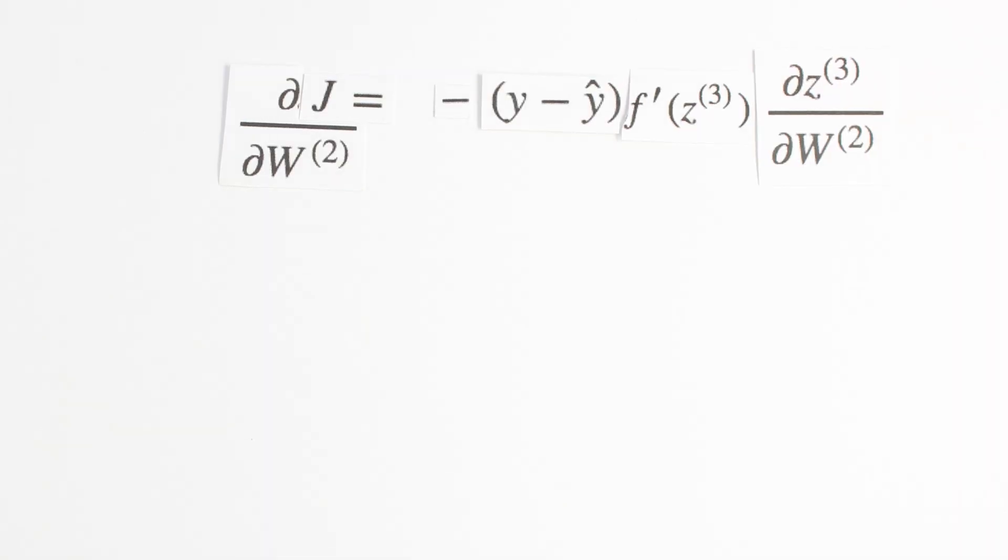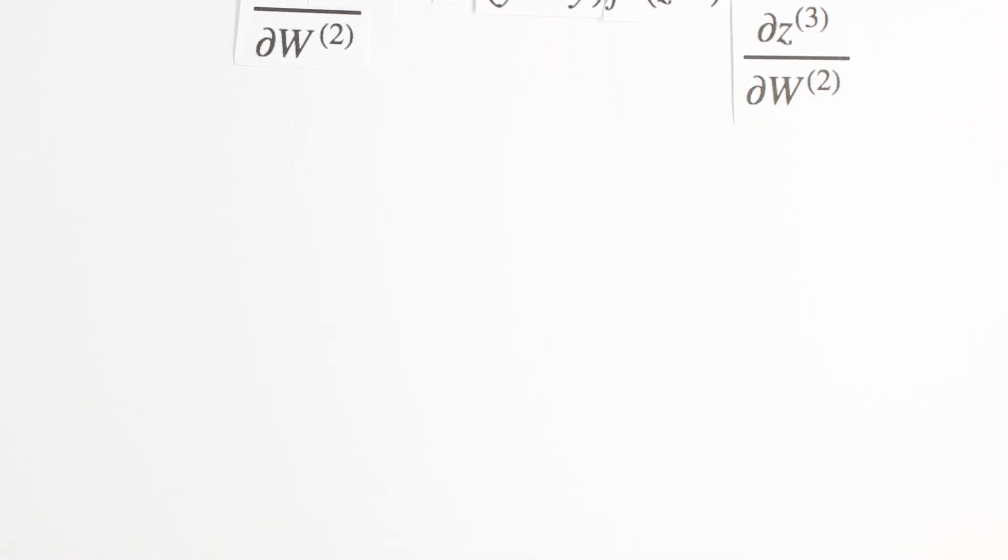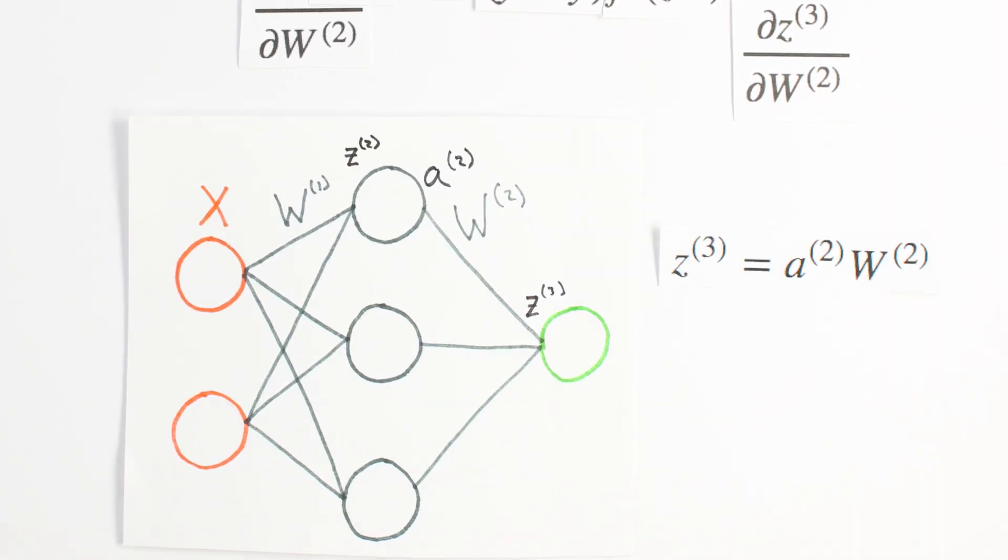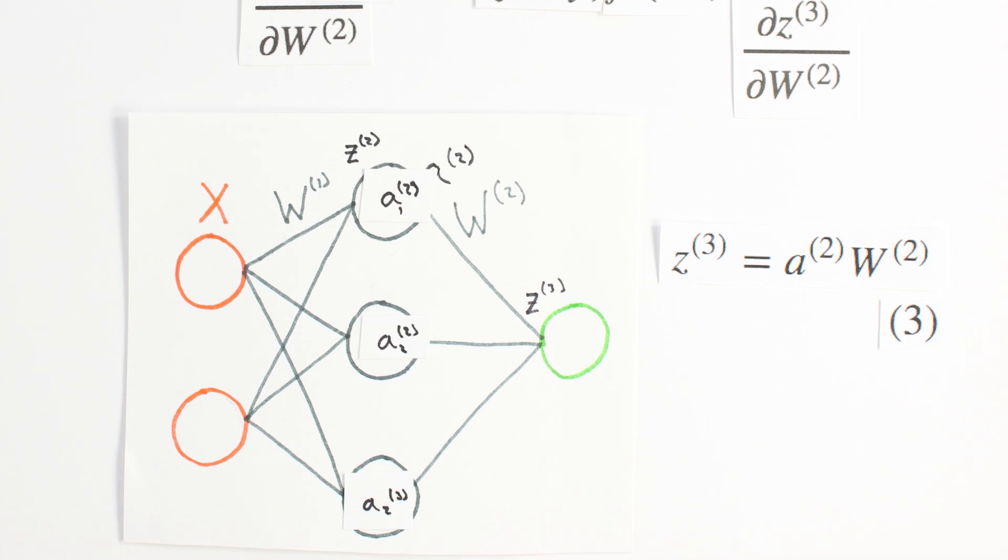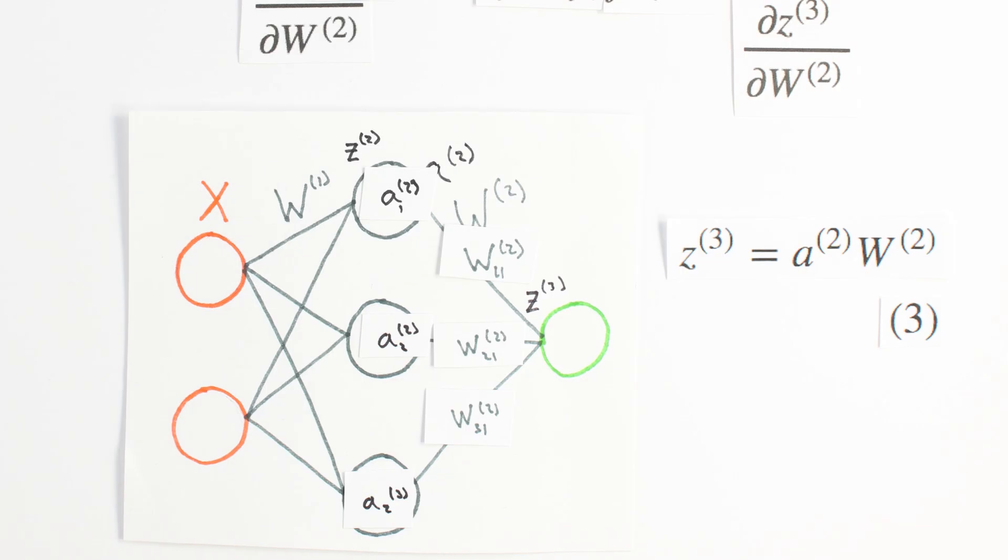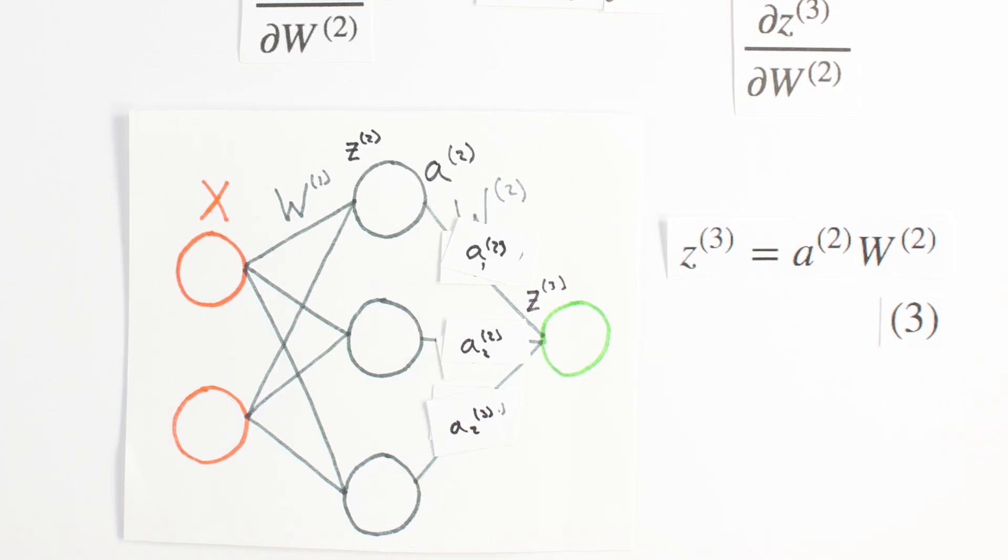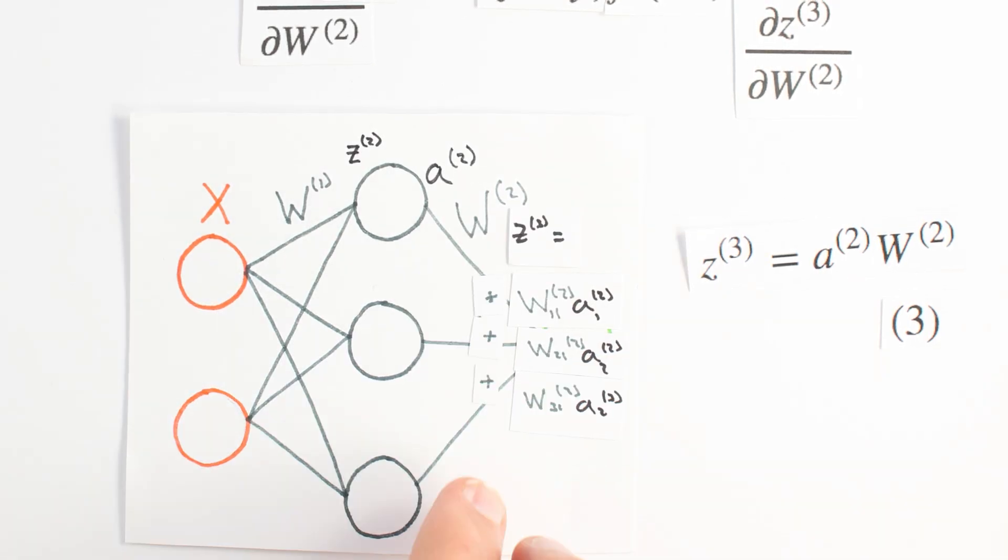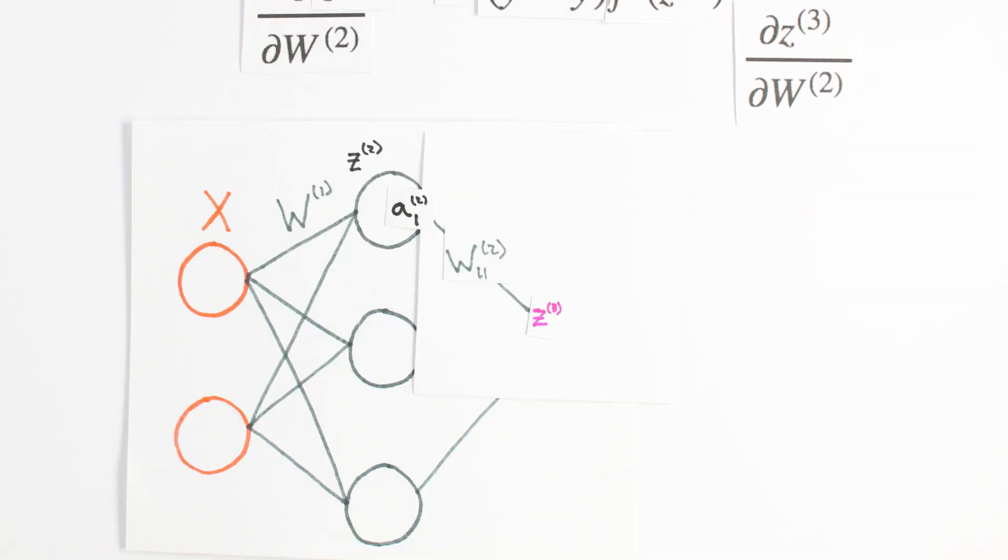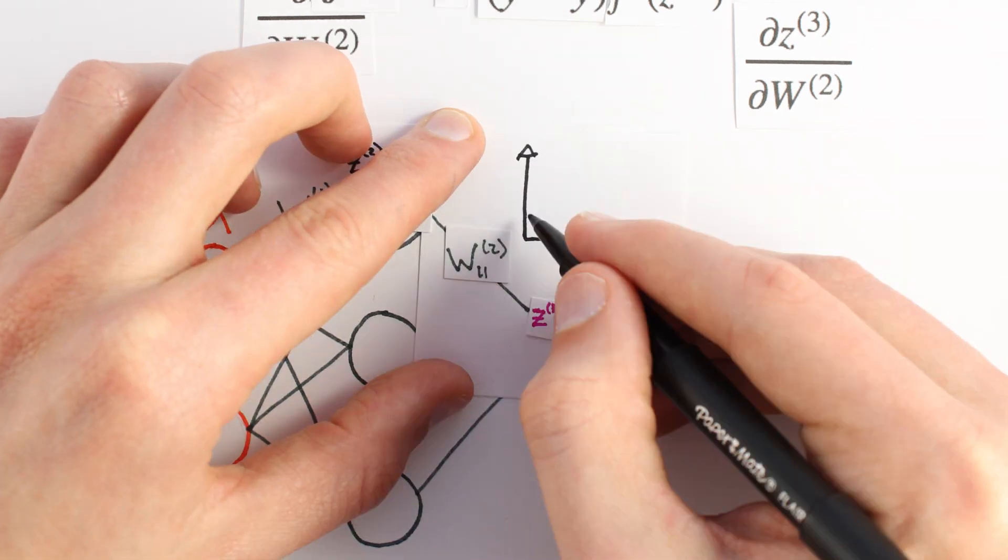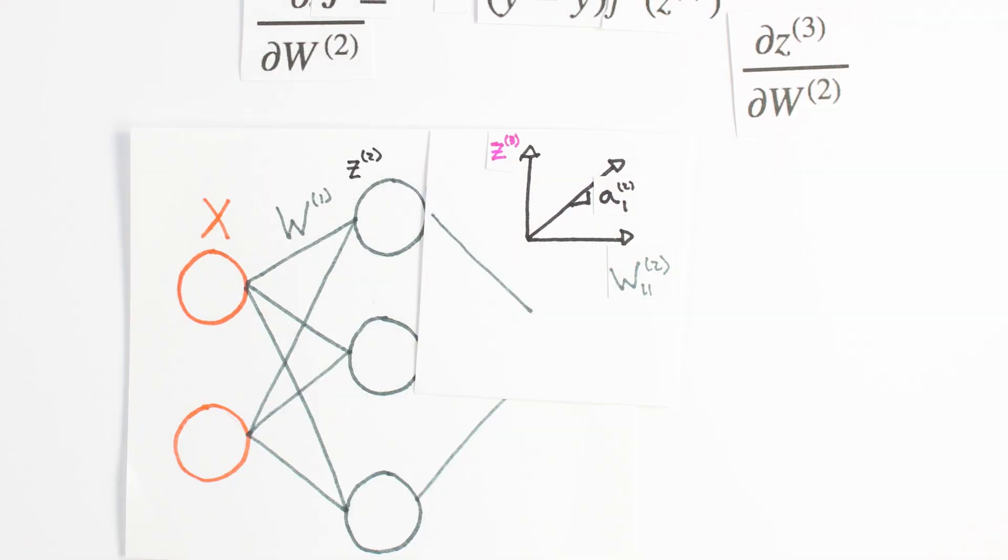Our final piece of the puzzle is dz3 dw2. This term represents the change of z, our third layer activity, with respect to the weights in the second layer. z3 is the matrix product of our activities, a2, and our weights, w2. The activities from layer 2 are multiplied by their corresponding weights and added together to yield z3. If we focus on a single synapse for a moment, we see a simple linear relationship between w and z, where a is the slope. So for each synapse, dzdw2 is just the activation a on that synapse.